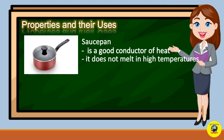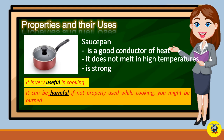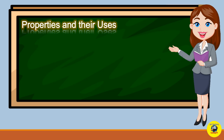A saucepan is a good conductor of heat. It does not melt at high temperatures and is strong. It is very useful in cooking. But on the other hand, it can be harmful if not properly used while cooking, because you might get burnt.